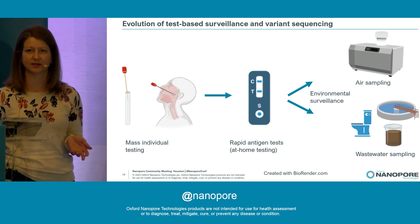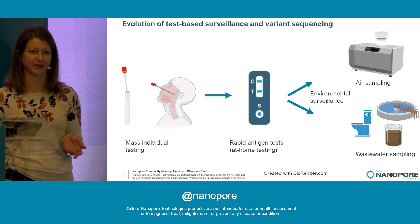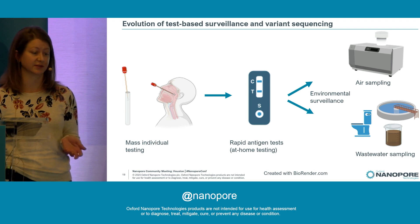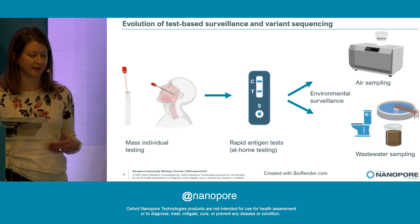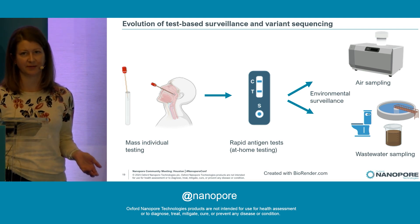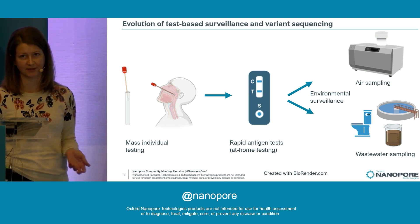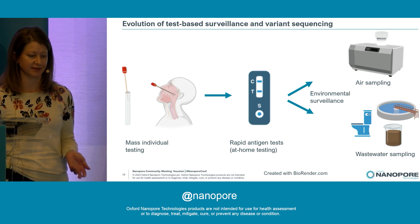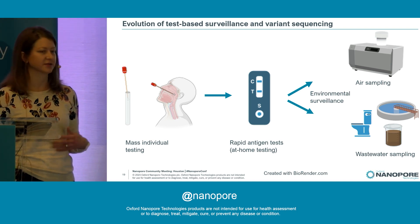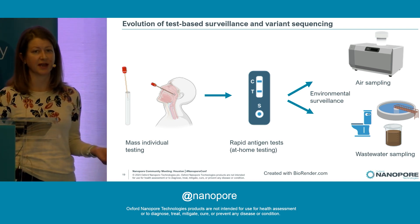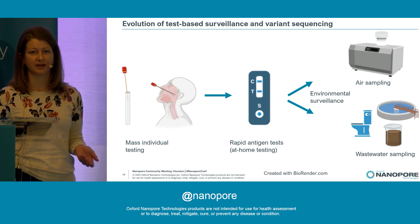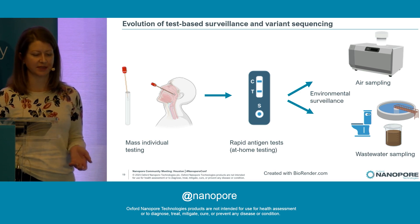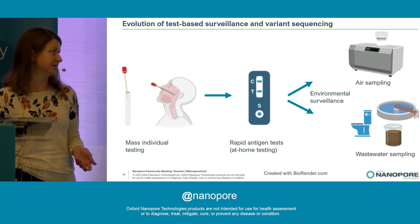And so we don't necessarily know what's happening in the broader population, because those samples that are being sequenced are typically coming from the healthcare setting and generally quite sick individuals. So one way to bridge this gap in sequencing surveillance is to use anonymous pooled testing, such as environmental surveillance.